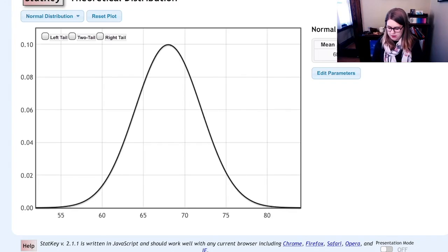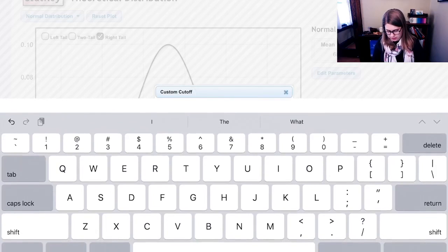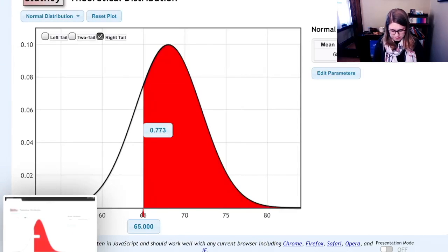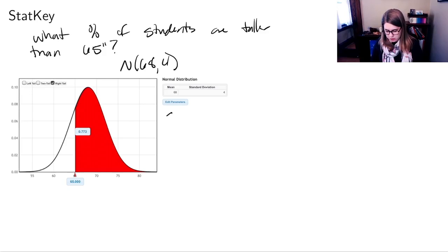That's going to be a right tail. I'm going to do a right tail and then I'm going to change this endpoint to be 65. 77.3%. And I'll take a screenshot. So by using that distribution, we said 77.3%.